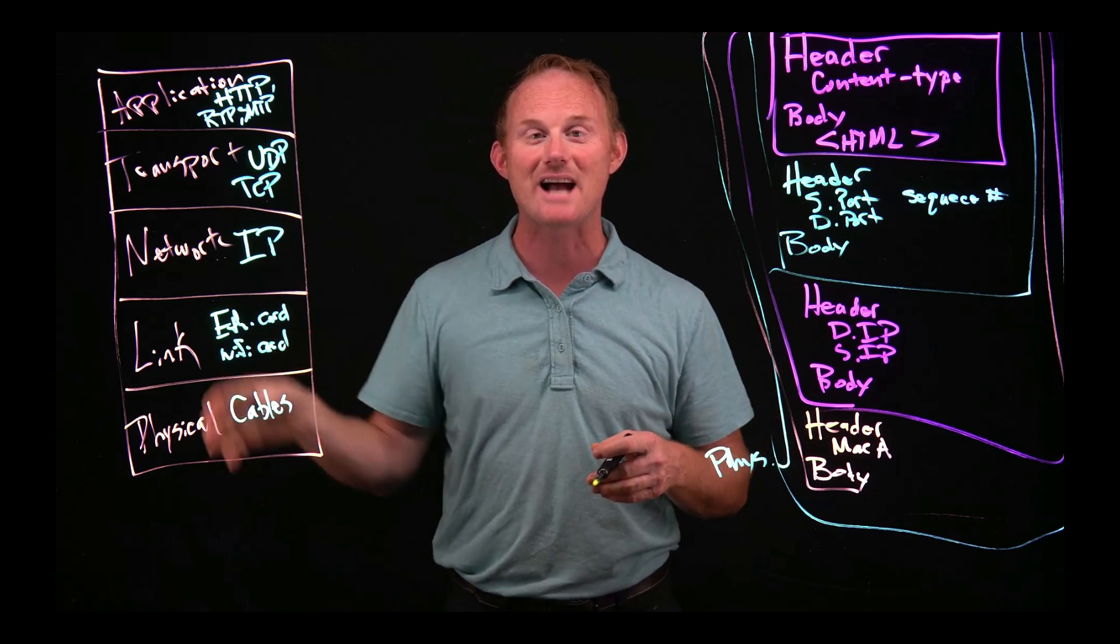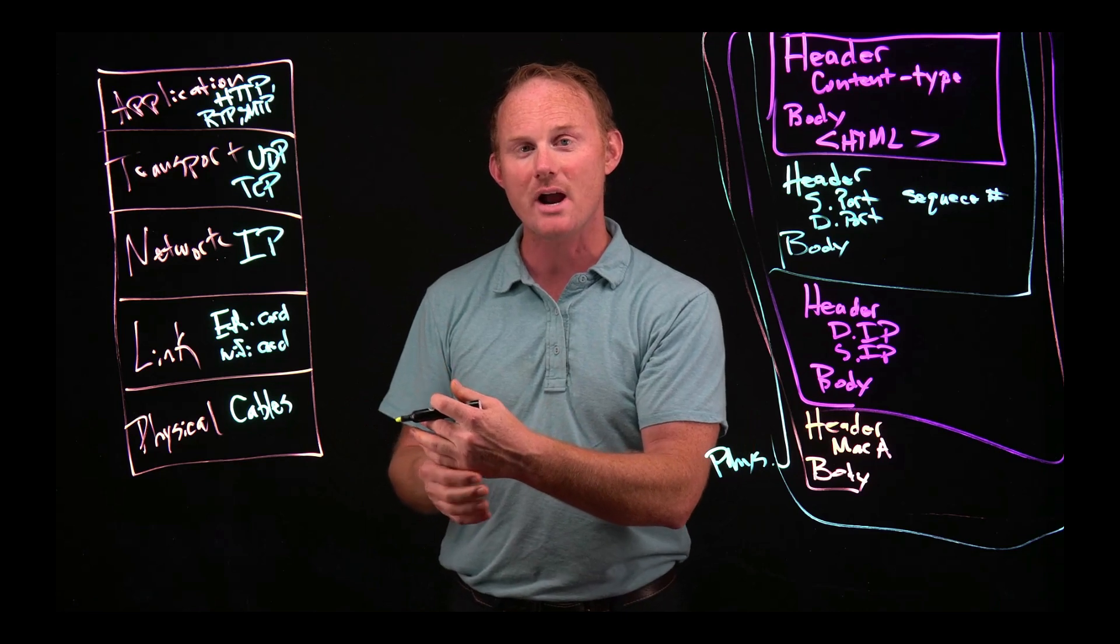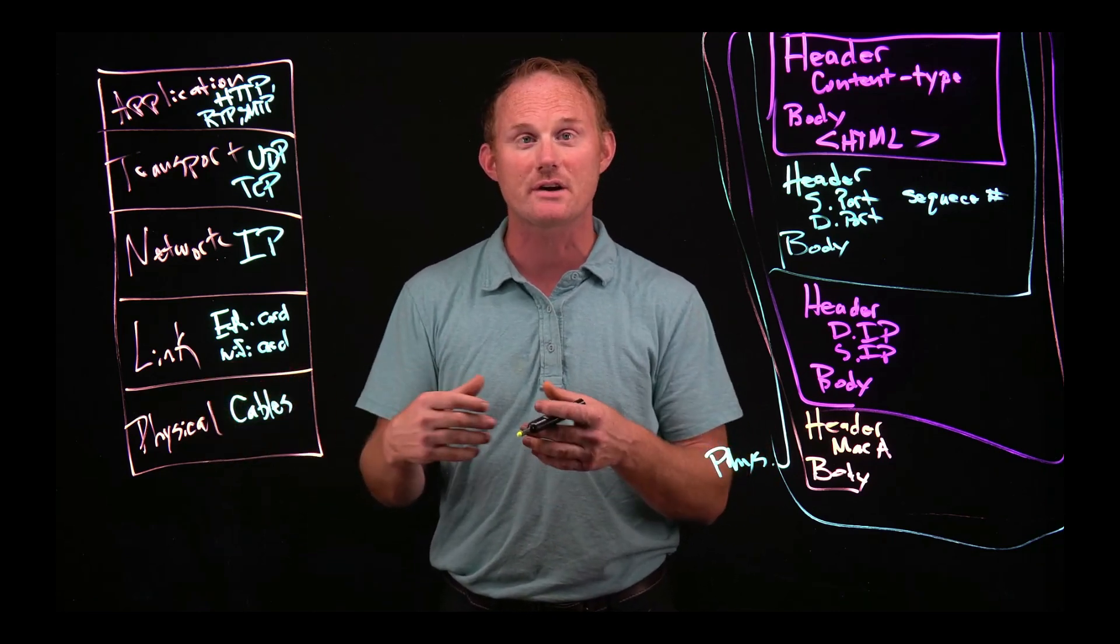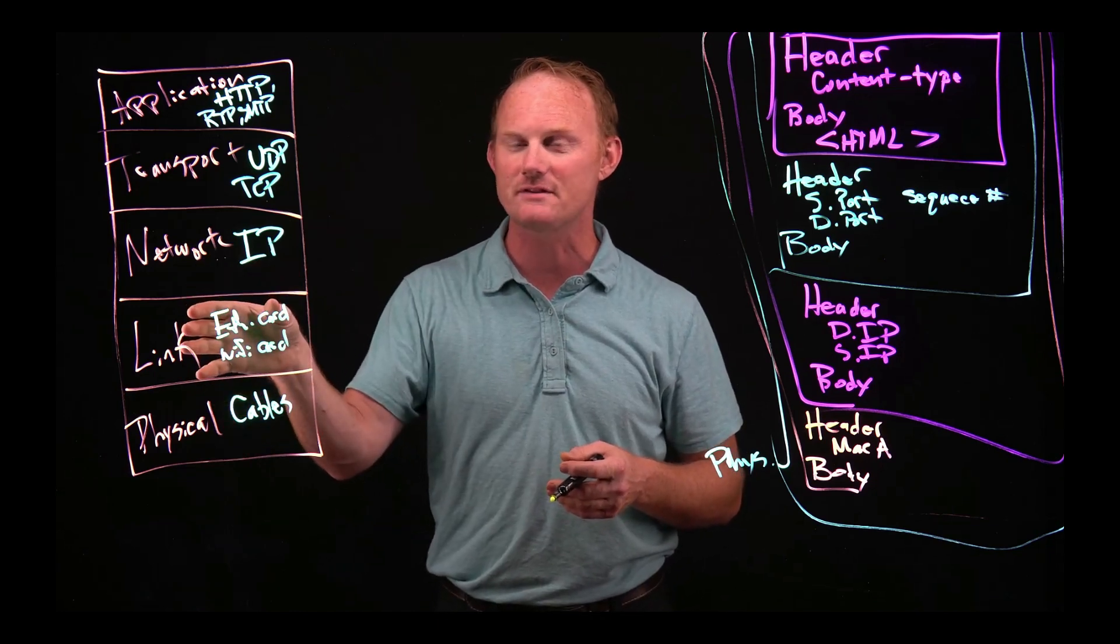It's kind of like nesting dolls where each layer has the one before it inside. When it gets across the wire to the other network, everything will unpack in reverse order where the physical layer only cares about its header. Again, it doesn't really have headers, but it will hand everything off to the link.